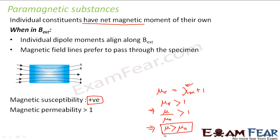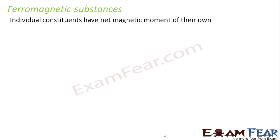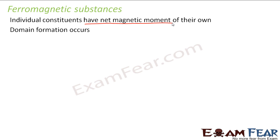Now let's look at the third type — ferromagnetic substances. In ferromagnetic substances, the individual constituents also have a net magnetic moment of their own, similar to paramagnetic substances. But something different that happens here is domain formation. We will talk about domain formation when we discuss the theory behind each of these categories.